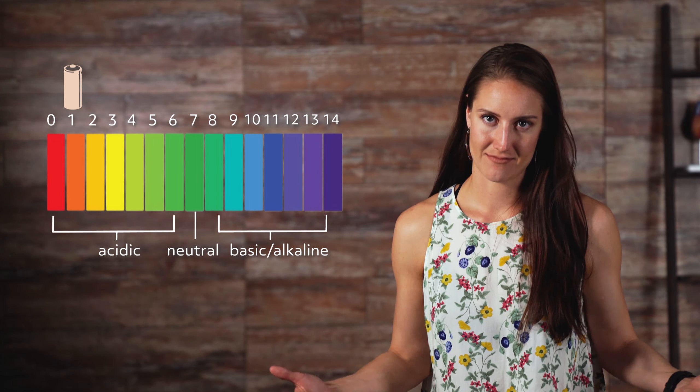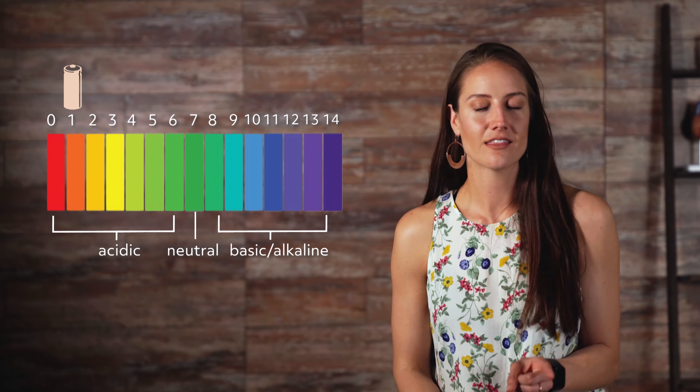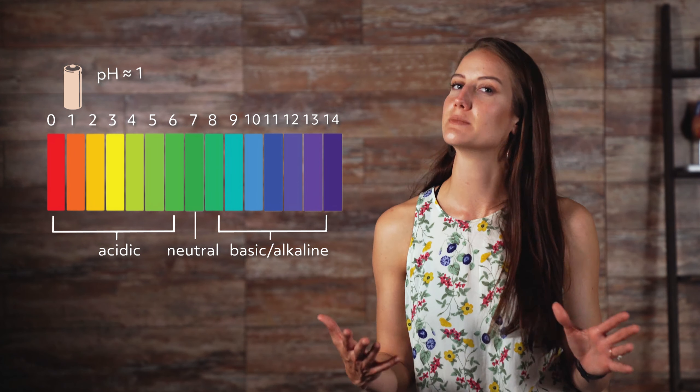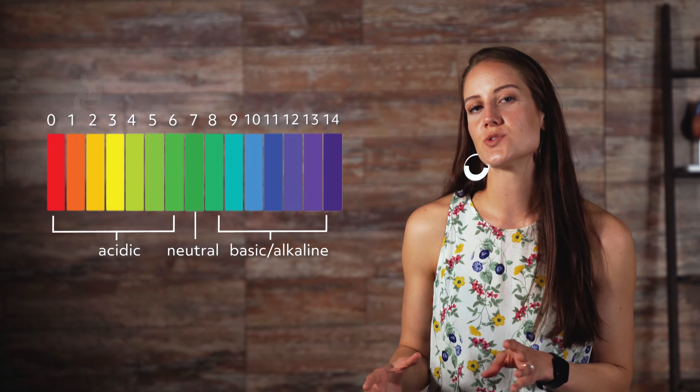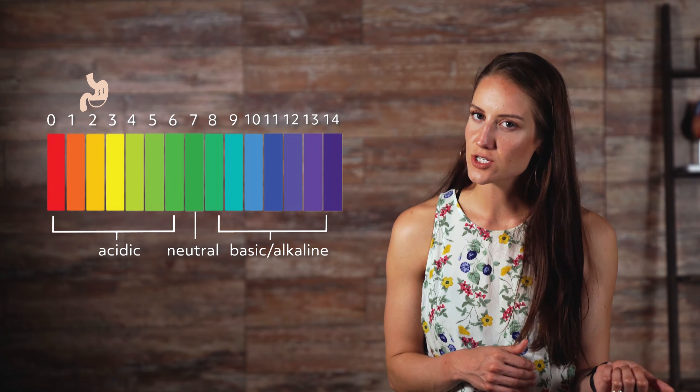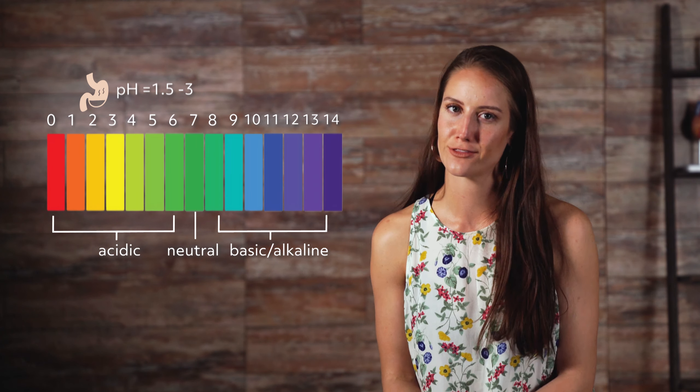Battery acid, a very corrosive substance, is a strong acid. Therefore, it falls on the lower end of the pH scale with a pH of approximately 1. The gastric juices in your stomach, which help you to digest food, are acidic too, with a pH value somewhere between 1.5 and 3.